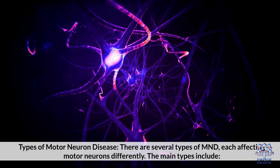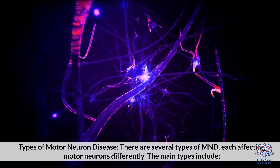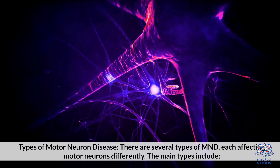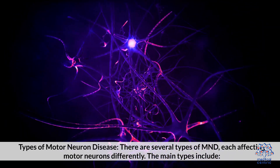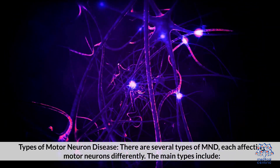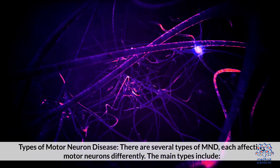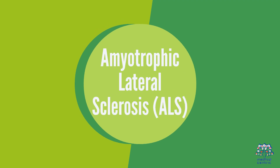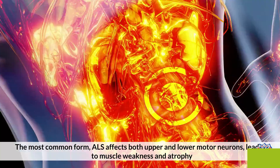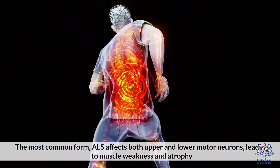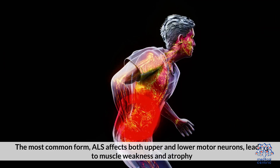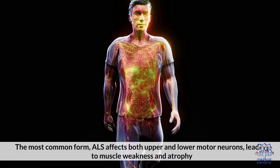Types of Motor Neuron Disease. There are several types of MND, each affecting motor neurons differently. The main types include: 1. Amyotrophic Lateral Sclerosis, ALS — the most common form. ALS affects both upper and lower motor neurons, leading to muscle weakness and atrophy.